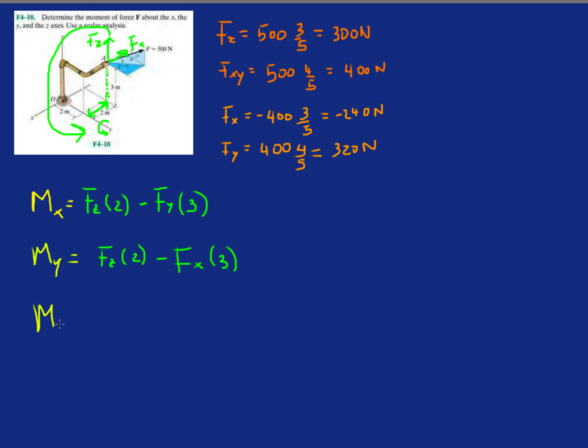And then last but not least, we need MZ. For MZ, we don't need FZ for this one. This is FY, we need FY and FX. So FY, I have to shift it this much, so its line of action intersects the z-axis. So it's going to be FY times two.